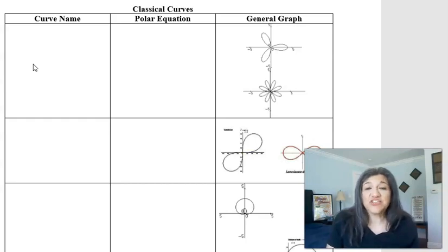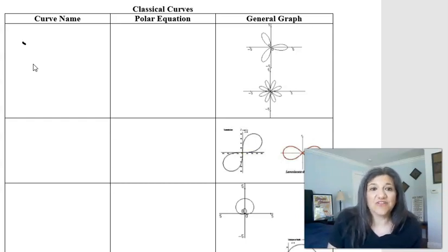I have mine recorded on our worksheet, and we are just going to work through this and talk about the different curves. Alright, the first curve that we see is called a rose.